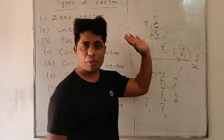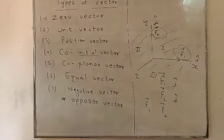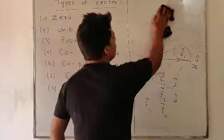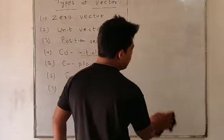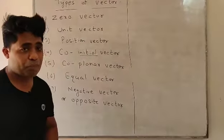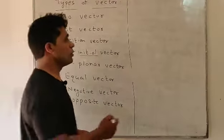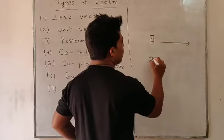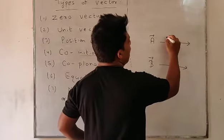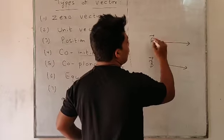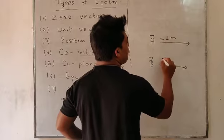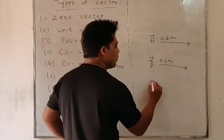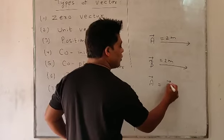Now, equal vector: if two or more vectors have equal magnitude and equal direction, they are said to be equal vectors. For example, suppose vector A and vector B are in the same direction and both have a magnitude of 2 meters — equal magnitude and equal direction — so vector A and vector B are said to be equal vectors.